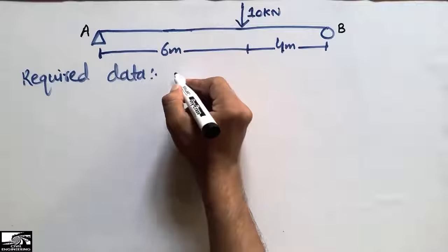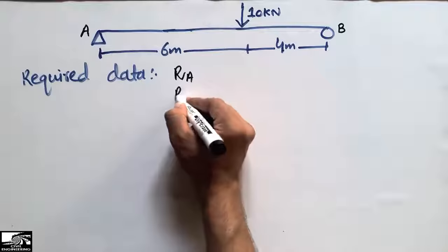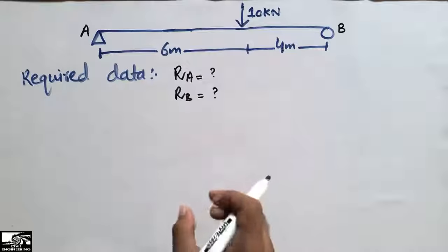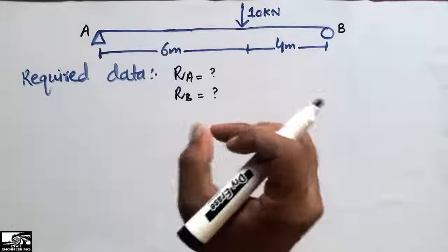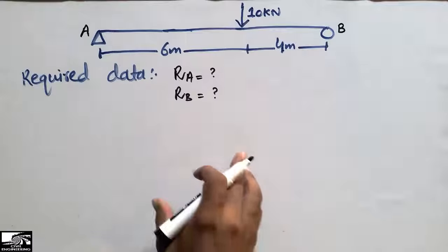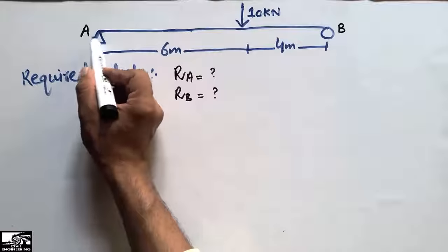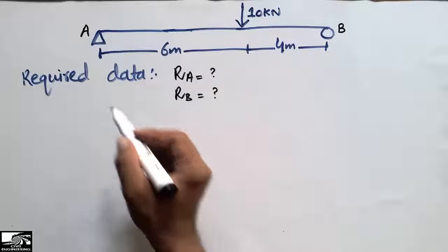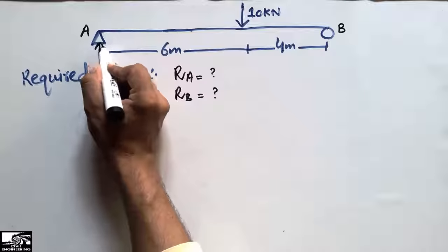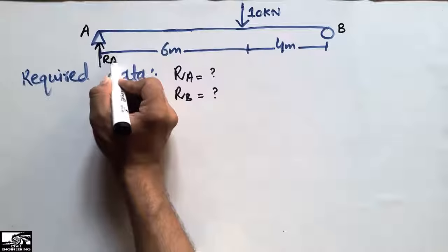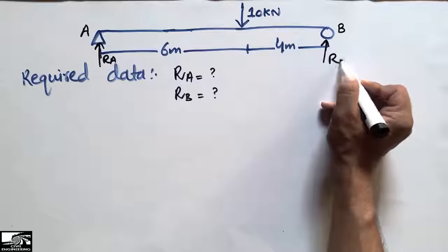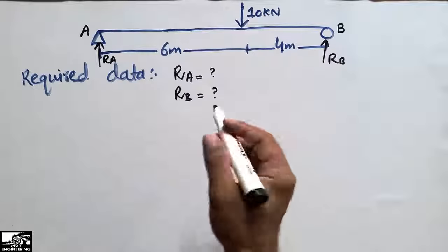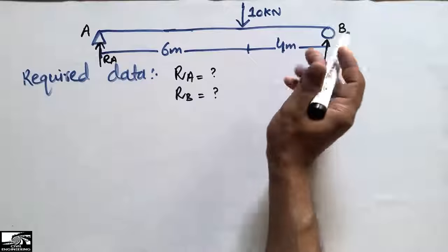The required data is to find RA, the support reaction at point A, and RB, the support reaction at point B. We will also verify our results using the vertical equilibrium rule. At point A we have a pin support and at point B we have a roller support. These supports cannot resist any moment, so the reactions RA and RB will act in the upward direction to support the concentrated load.